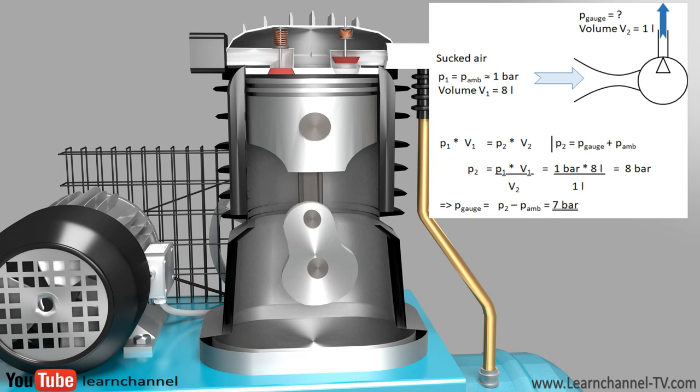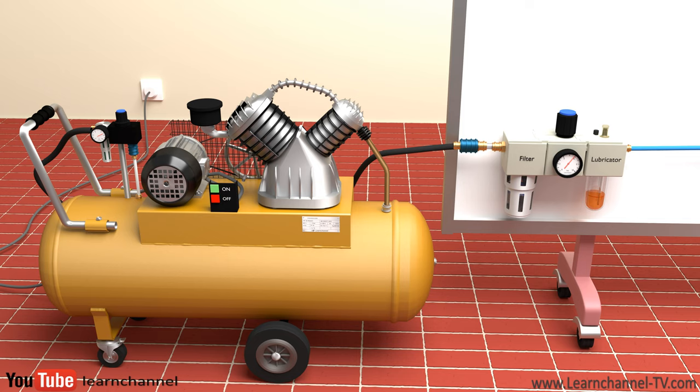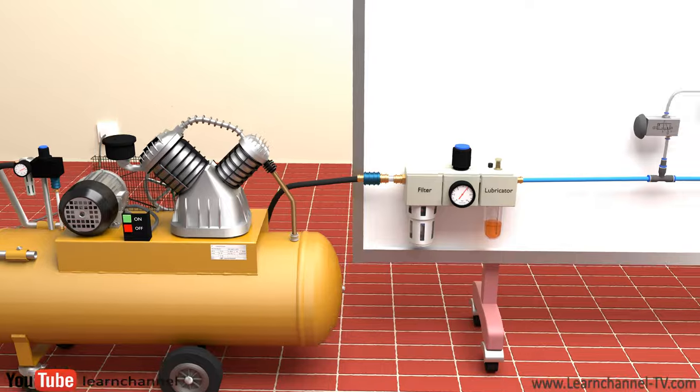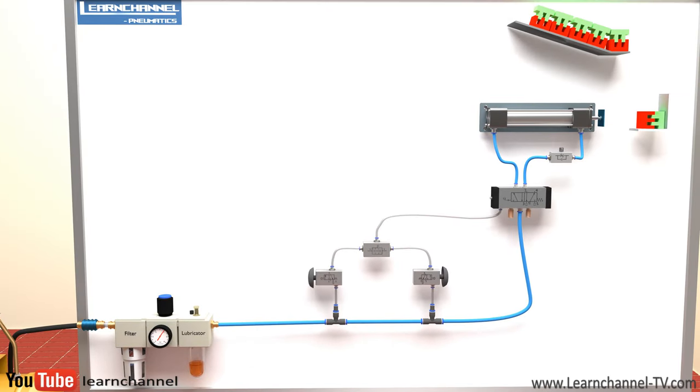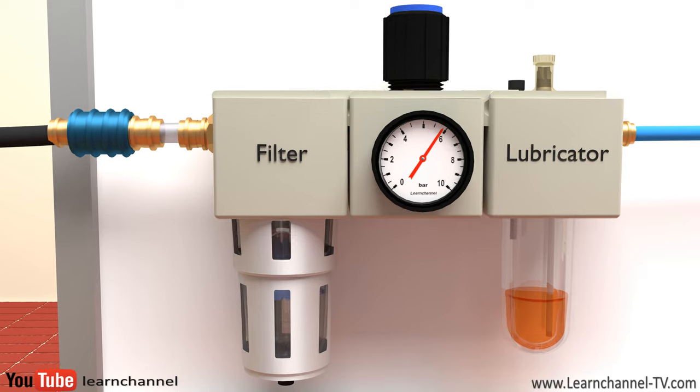Once the air is compressed, it must be dried and cleaned of moisture and dirt to ensure reliable operations. Dirt can clog up the moving parts of the system, and water can cause corrosion of valves and fittings. That's where FRL comes in. FRL stands for filter, regulator, and lubricator. Let's identify each unit.